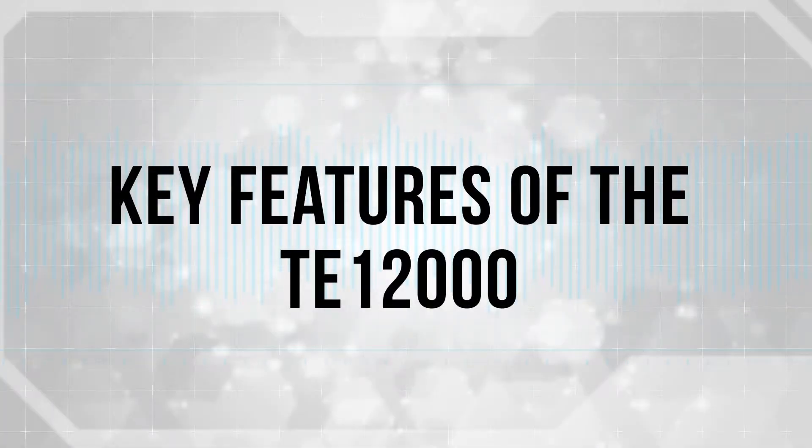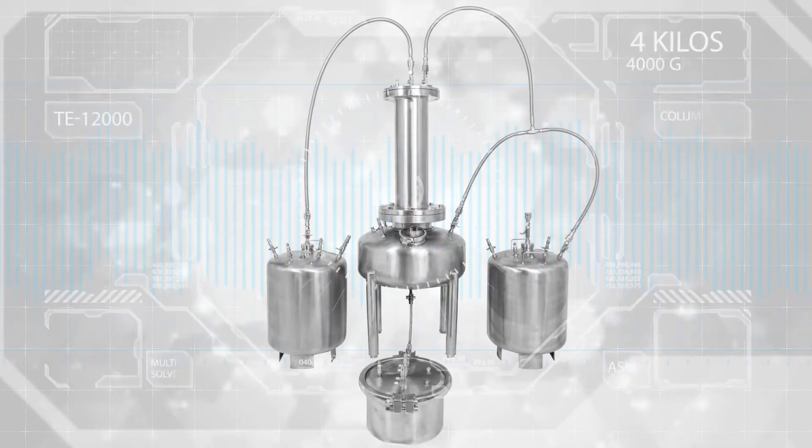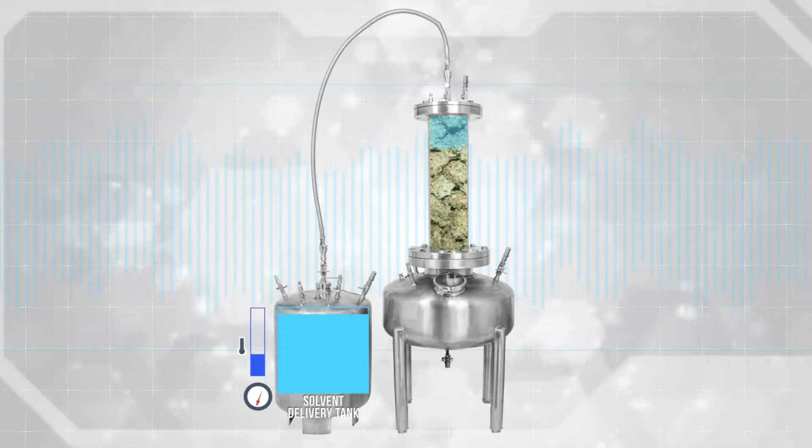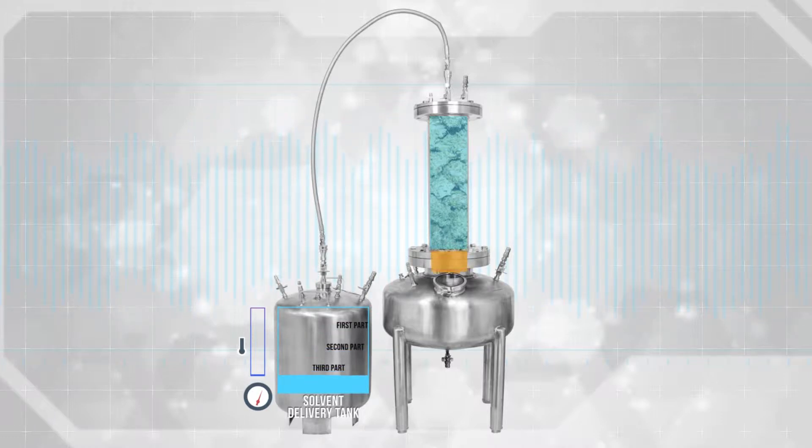Key Features of the TE12000 Extractor. This TE12000 Timisium Extractor can hold 4 kilos of plant material and extract as fast as 5 minutes using a temperature range from as low or high as your supplied chiller heater can go. Common temperature range is -40°F to 120°F.